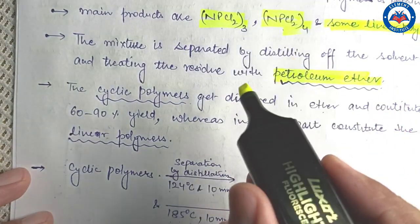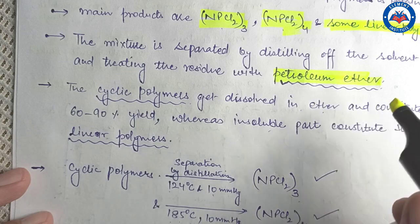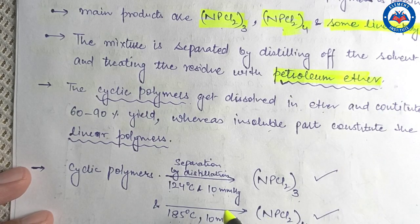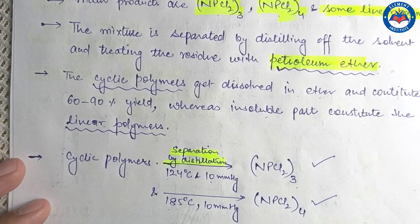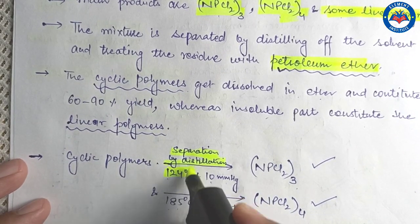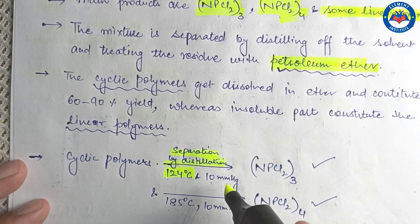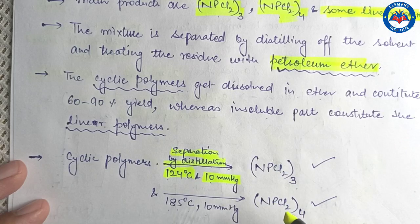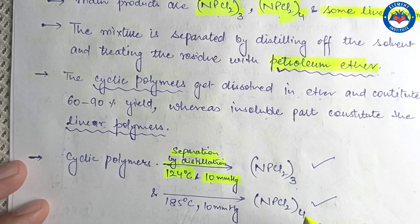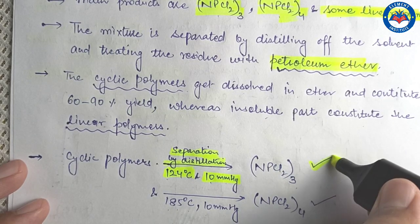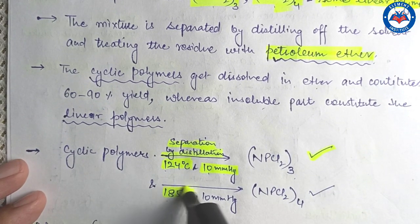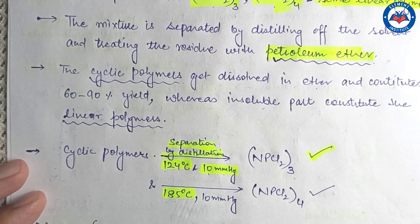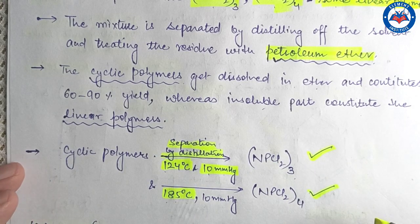The mixture of cyclic polymers dissolved in petroleum ether can be separated by simple distillation. Heating the mixture at around 124 degrees Celsius under a pressure of 10 mmHg yields the cyclic trimer. Heating at around 185 degrees Celsius under the same pressure yields the cyclic tetramer.